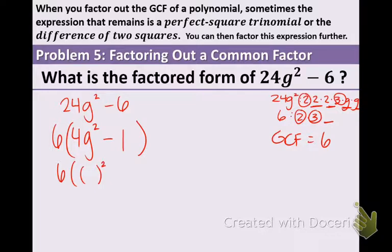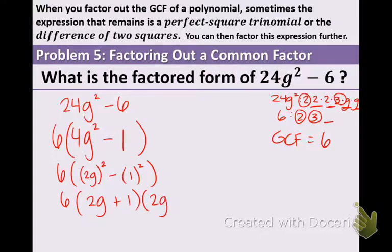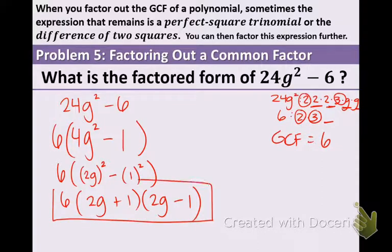What times itself gives us 4g squared? The answer is 2g. Basically, we're taking the square root. What square gives us 1? Well, 1. So now, shortcut method, 2g plus 1 and 2g minus 1. And that's the answer. Factored form of the given trinomial, or actually a binomial.